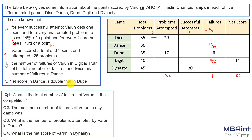Net score in dance is double that in dupe — so if dance net score is 2x, dupe net score is x. Now looking at the total number of problems altogether: 185. So the total number of problems not attempted is 185 minus 125, which is 60. For these 60 unattempted problems, the negative marking of 1/6 means minus 10 marks are deducted.